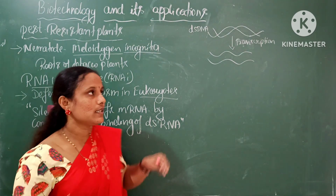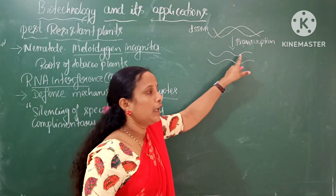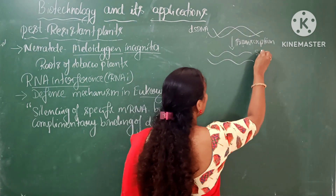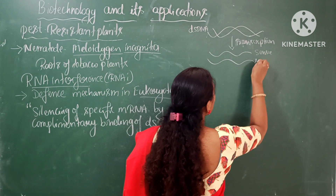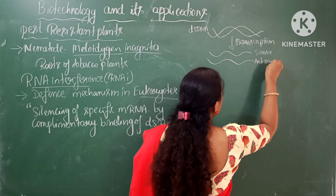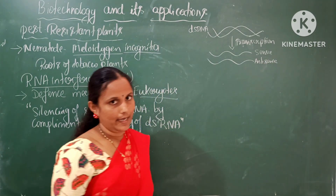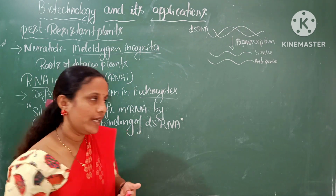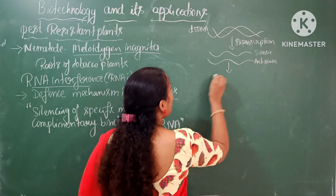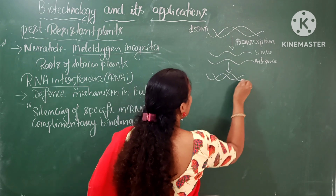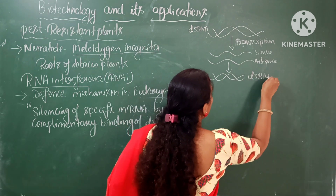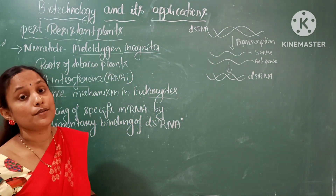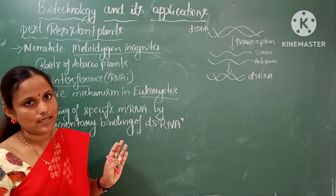But during RNA interference in eukaryotic cells, both strands of DNA undergo transcription, resulting in the production of both sense and anti-sense strands of RNA. Since these are complementary to each other, they form a double-stranded RNA, which will not undergo translation and will not produce any protein.